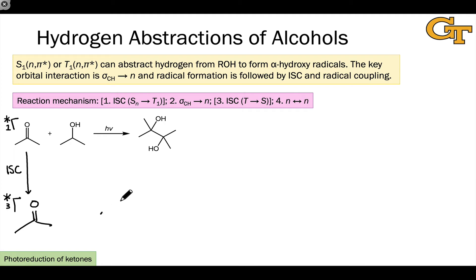The next step is then the hydrogen atom transfer via that key sigma-CH to n orbital interaction. In this case this leads to two identical ketyl radicals. This can happen either in a triplet fashion or from the excited singlet state, depending on the structure of the ketone.